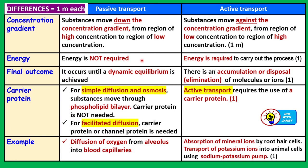In passive transport, energy is not required at all — that's why it's called passive transport; a passive person doesn't use up energy. In active transport, energy is required to carry out the process because substances are moved against the concentration gradient, and this movement requires energy.